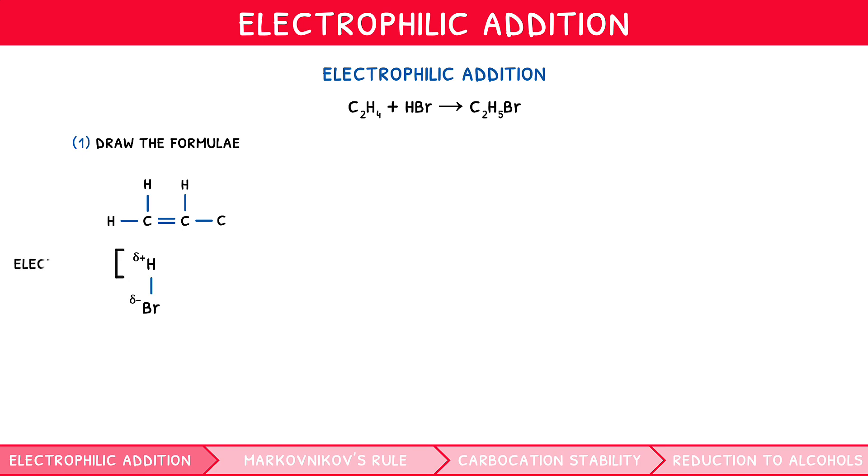This hydrogen acts as an electrophile and is attracted to the region of high electron density within the double bond, accepting its electrons to form a dative bond. We indicate this by drawing a double-headed curly arrow from the double bond to the hydrogen atom to represent movement of electrons.